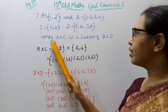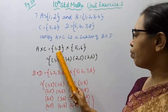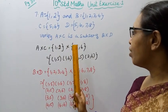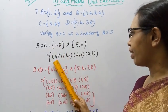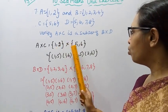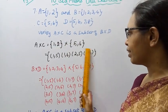A cross C: A is 1,2 set, C is 5,6. Computing A cross C gives us 1,5, 1,6, 2,5, 2,6.